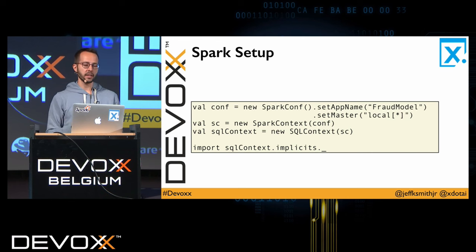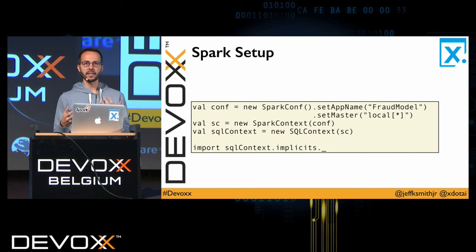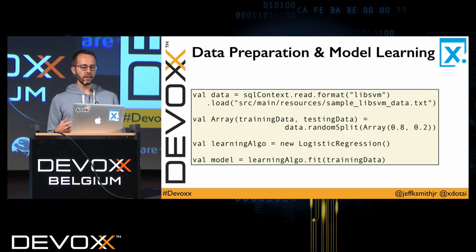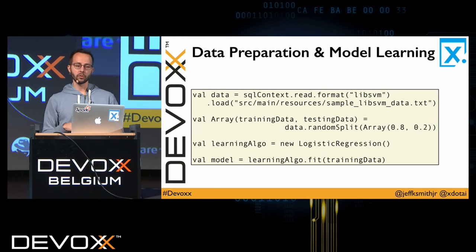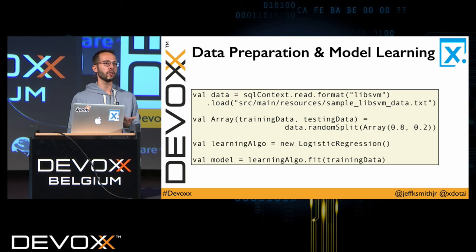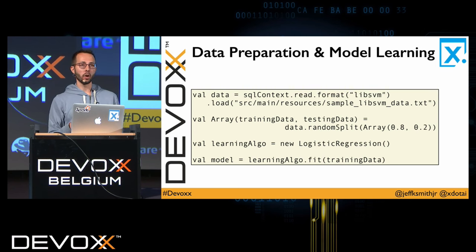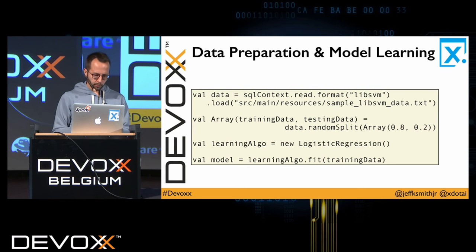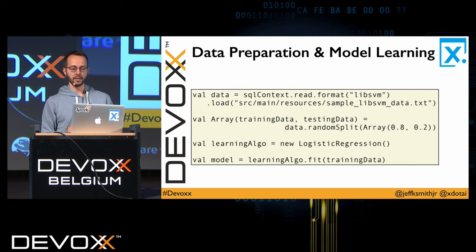Here's some basic boilerplate to set up the context in which we're executing — just basic setup about what our application is on this cluster. We're going to load in our data and then partition it into training and test data. This is a common machine learning technique: we use some data to learn our model and a later set — the test or validation set — to make statements about the performance of our model. Then we instantiate a new learning algorithm and train a model on the training set.